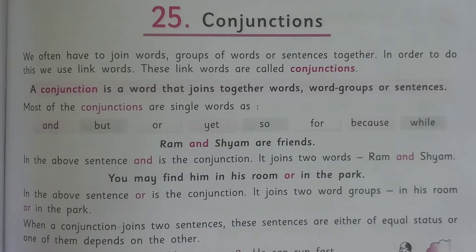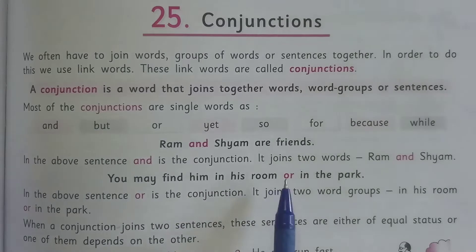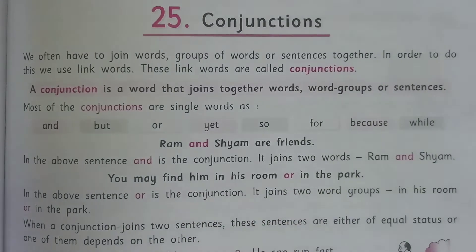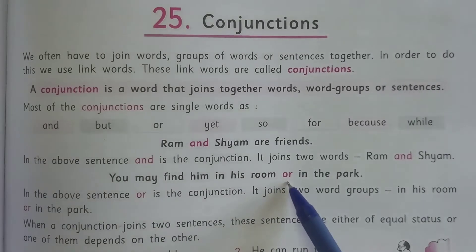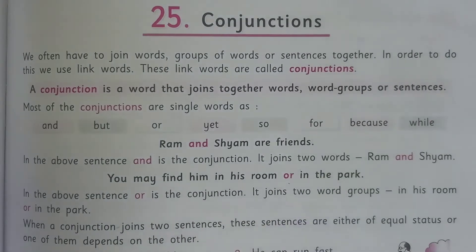These words are joining groups of words or sentences together, so they are called conjunctions. See the given example: 'You may find him in his room or in the park.' In this example, 'or' is the linking word which joins two word groups — 'in his room' or 'in the park.'